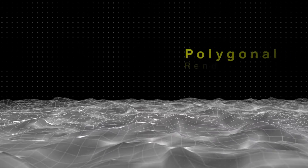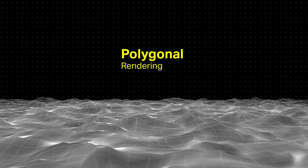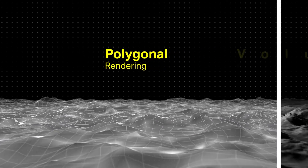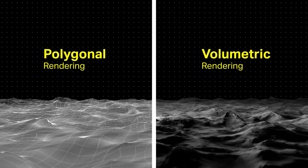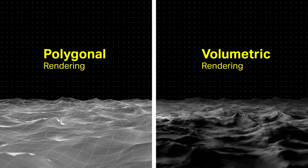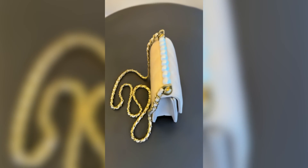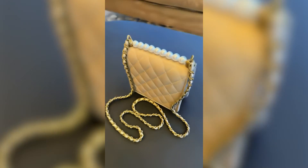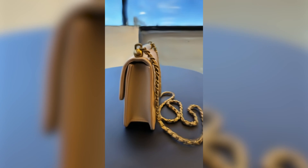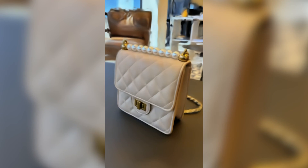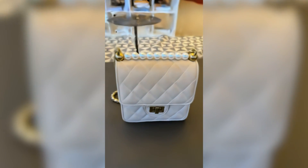The key differentiation is that rather than creating polygonal models and textures, NeRF data is used to create a volumetric rendering approach. Using volumetric rendering allows us to create high-fidelity outputs that can preserve some types of detail that can be extremely difficult to represent in a polygonal rendering approach.